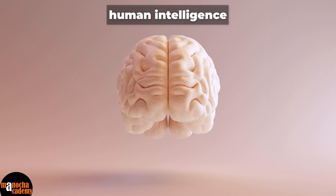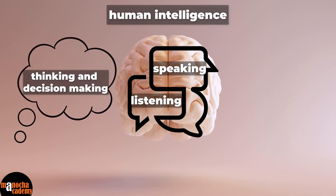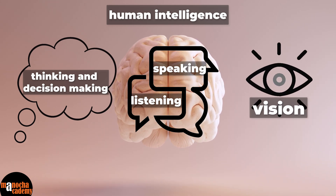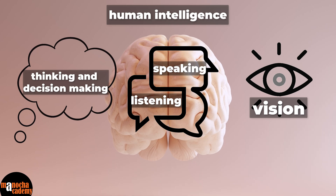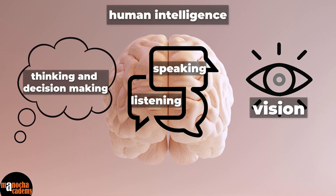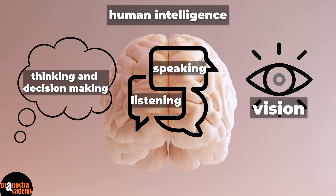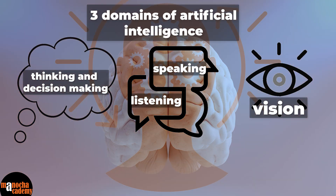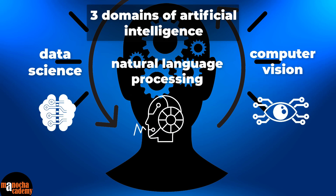We can divide human intelligence into three broad categories: thinking and decision making; communication, which includes listening and speaking; and vision, which is seeing and perceiving things around us. To build an artificial intelligence system similar to human intelligence, we need these three parts to work together. These three broad categories are known as the three domains of artificial intelligence. They are given the names data science, natural language processing, and computer vision.